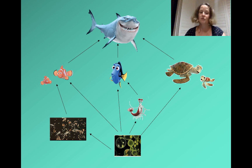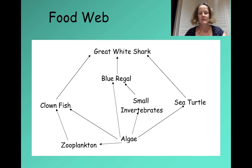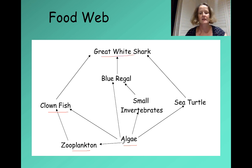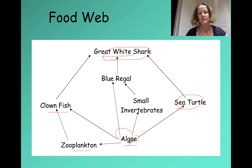Here is a food web with some familiar characters — it is complex, with a number of herbivores and carnivores. We could start with algae, going to zooplankton, then clownfish, then great white shark. Or: algae is eaten by a sea turtle, and then the sea turtle is eaten by a great white shark. We also have food chains going up the centre, and one going off to the left and one going off to the right.